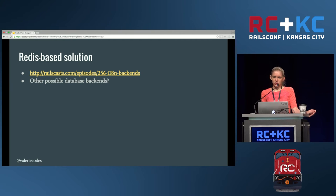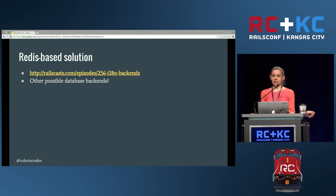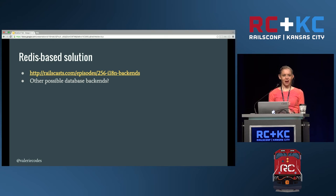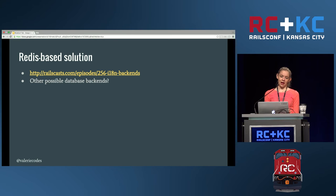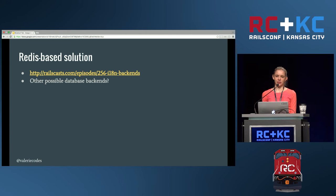Another possibility would be an Active Record or another database-based backend. Things to keep in mind: these keys are probably going to be dozens of them loaded on every page, so they need to be accessed all the time. An in-memory store or some sort of cache is probably going to be preferable to having to do a database lookup every time a key is referenced.